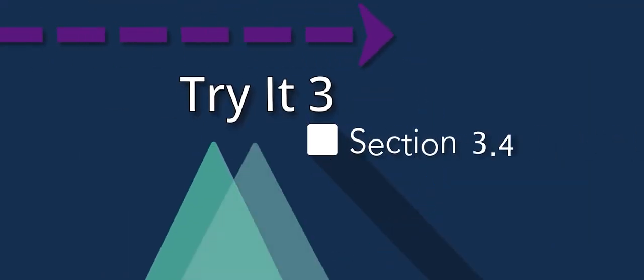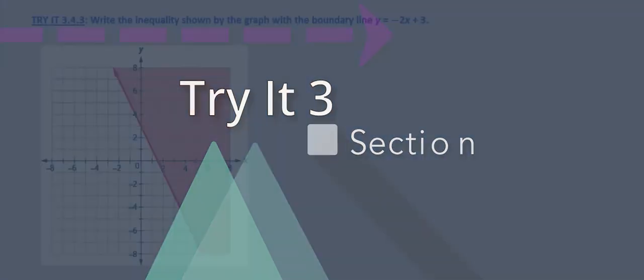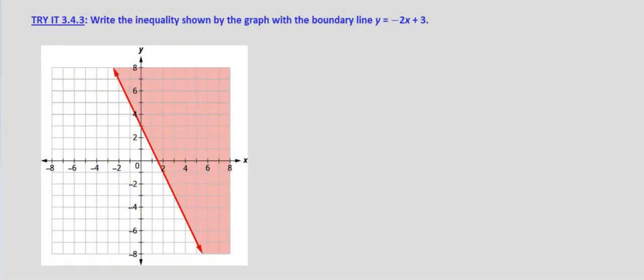In this tried exercise, we're asked to write an inequality given its graph. We're given the equation for the boundary line. If we didn't have the equation, we could find it, but this makes it easier since we're given the equation.